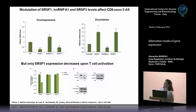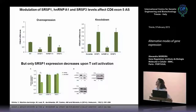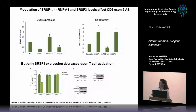Overexpression of SRSF1 and SRSF3 increased the full-length isoform, while overexpression of HNRNPA1 increased exon skipping, confirming their predicted roles. Knockdown experiments showed the opposite effects, validating the results. Crucially, when we examined protein levels upon T cell activation by qPCR and Western blot, only SRSF1 is decreased upon T cell activation — the other two proteins remain unchanged. We therefore focused on SRSF1, and UV cross-linking assays confirmed it can bind to the intronic region identified in the deletion analysis.